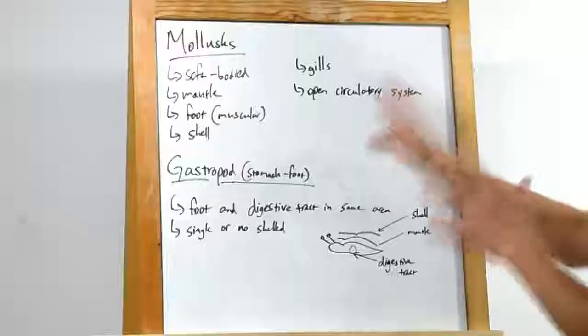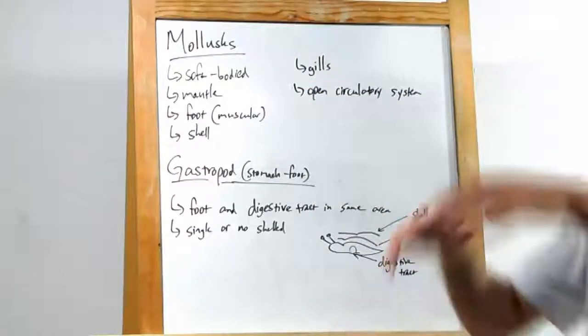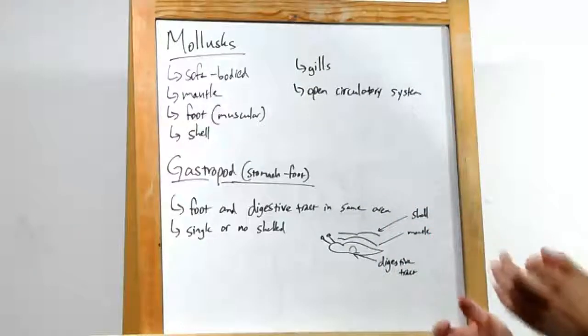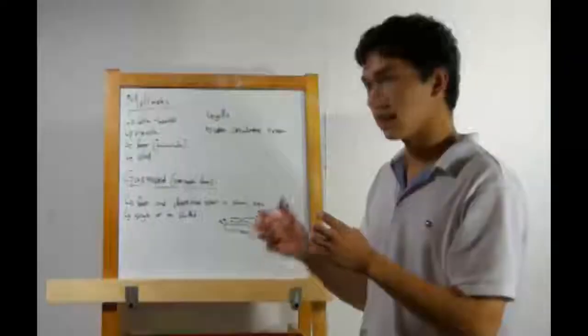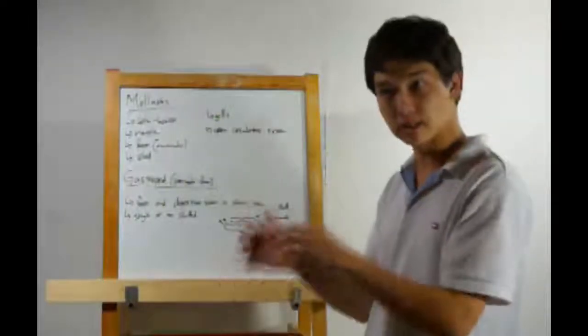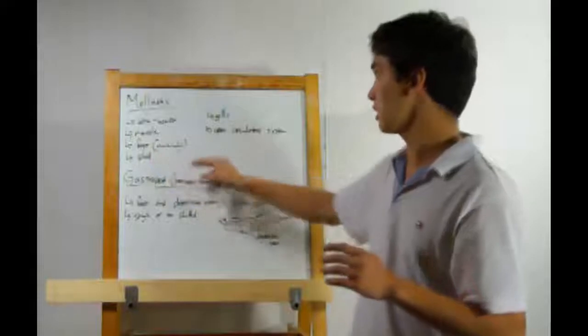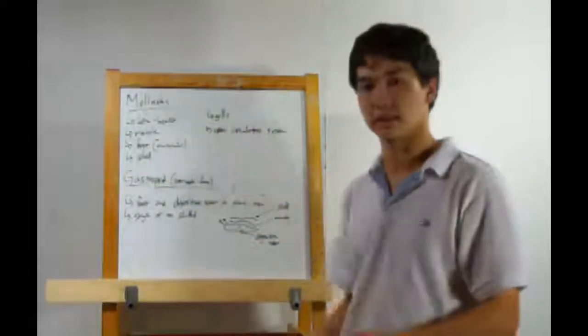All molluscs have a few things in common. They're all soft-bodied. They have a mantle, that's kind of like a protective covering for the internal organs. They all have a muscular foot. It's not always a foot, but it does cause motion in these things. They'll all have a shell, gills, and an open circulatory system.